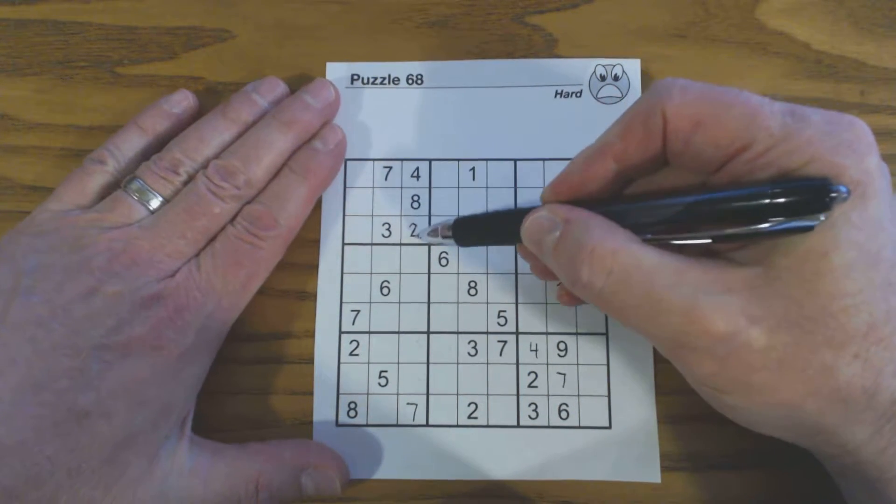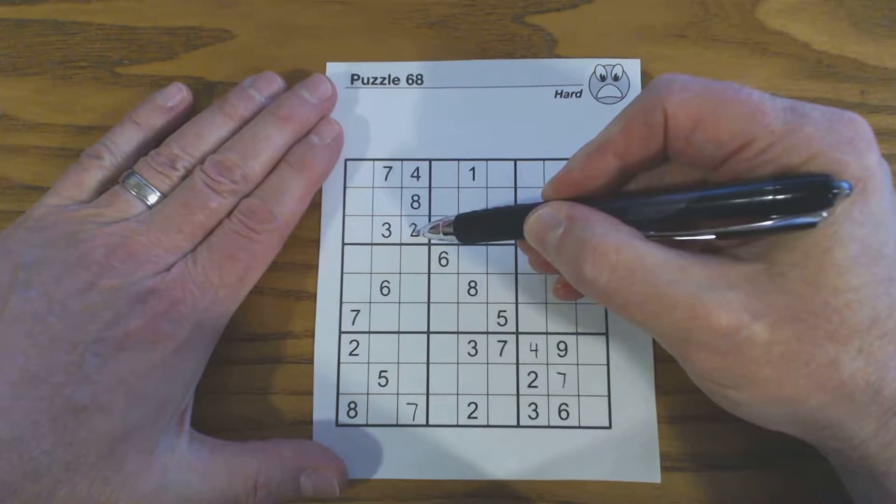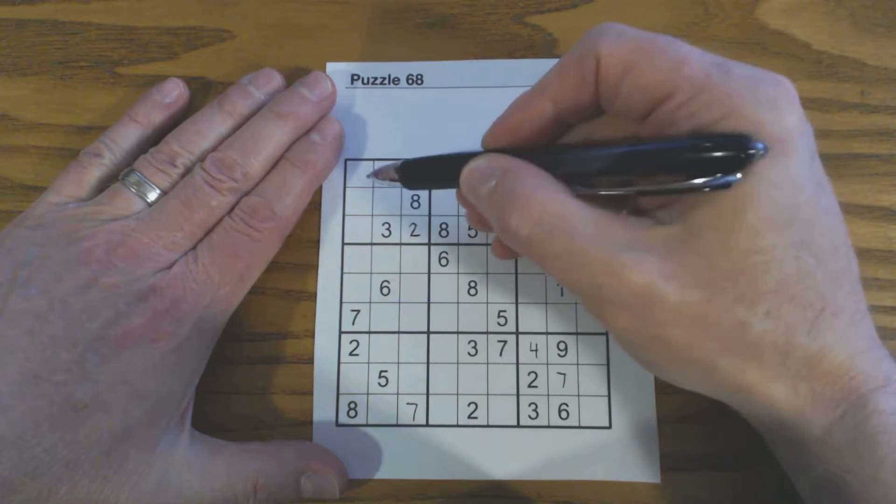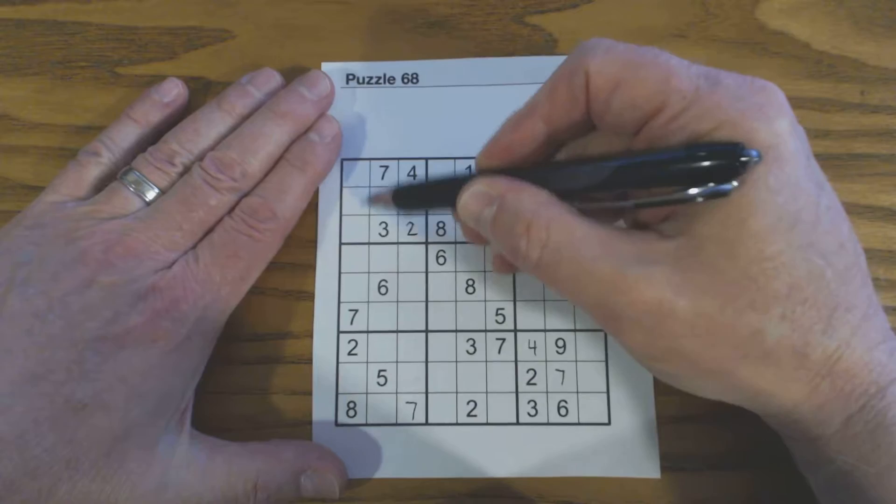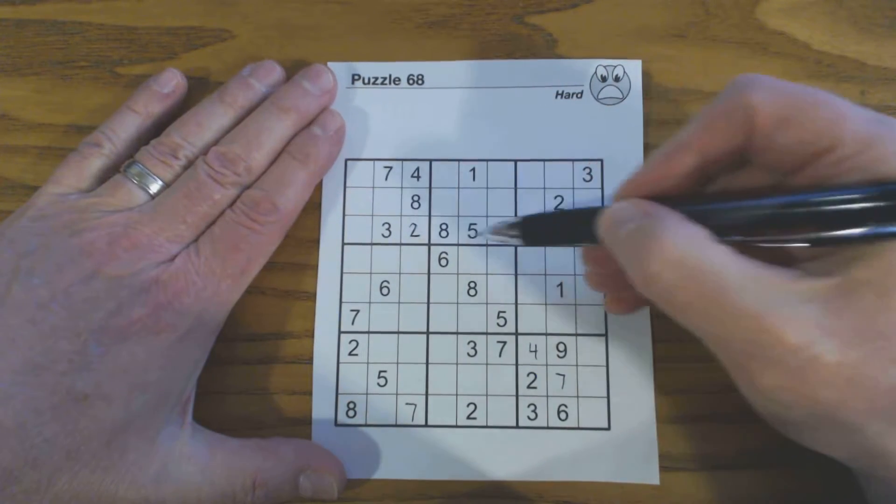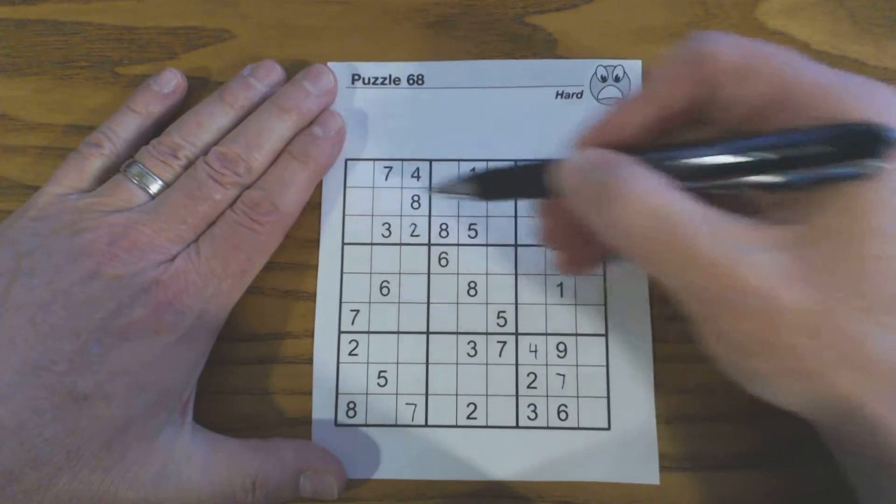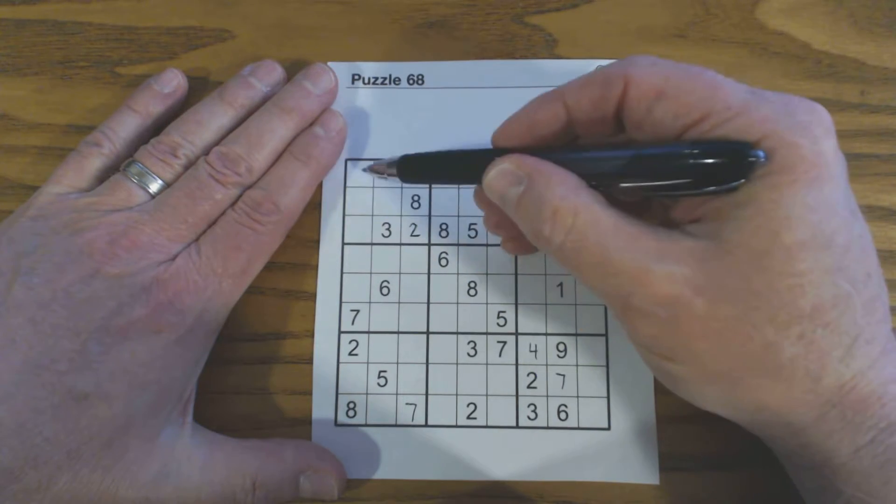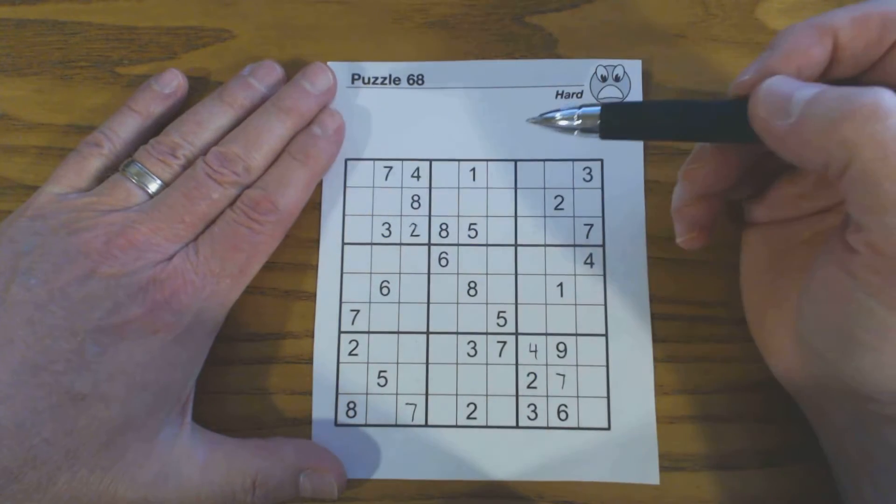There's a wall right here, and because of this wall in this square, this five and this six can only be in this column in this square. The five can only be in one of these two cells because of this five, and the six can be in any one of the three cells in that column.